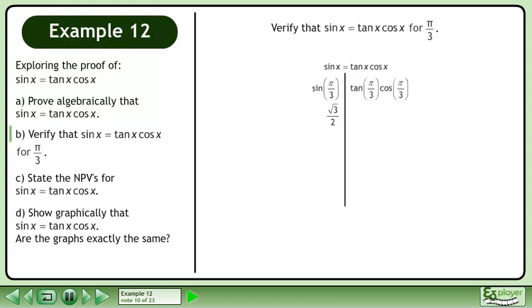On the right side, plug in π over 3. Tan of π over 3 becomes sin of π over 3 over cos of π over 3. Cancel. Sin of π over 3 equals root 3 over 2. The left side equals the right side, completing the verification.